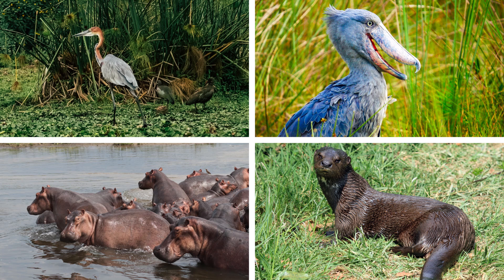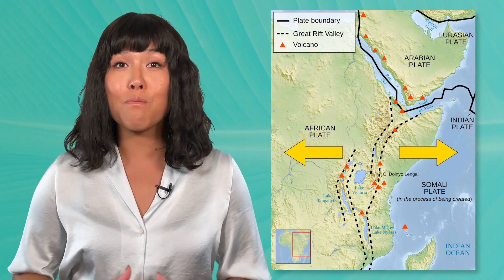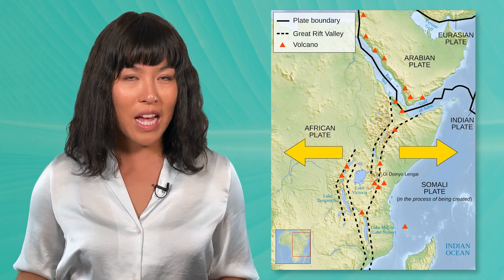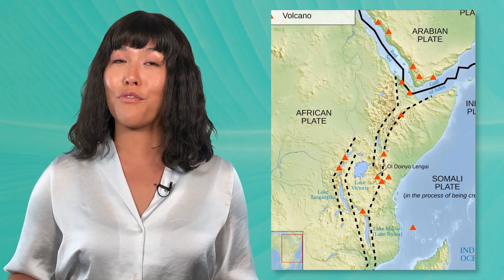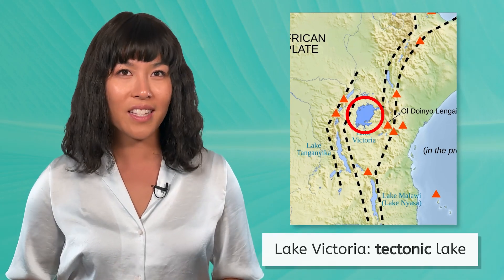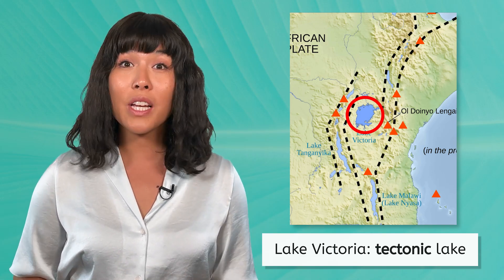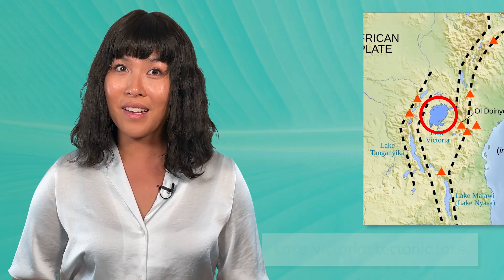Do you think it will stay that way? Or will this lake dry up and disappear, leaving its inhabitants stranded? The lake's formation will give us a clue. As the African tectonic plate began to split and move apart, the land in the region stretched and created depressions in the Earth's crust. These depressions filled with water, creating Lake Victoria. This means that Lake Victoria is a tectonic lake. Tectonic lakes take a long time to form and generally don't change much for millions of years once they do. This is another reason that we see such a large variety of life forms here — they have had plenty of time to perfect their adaptations for this lush habitat.